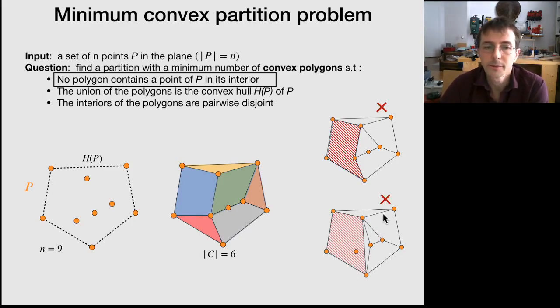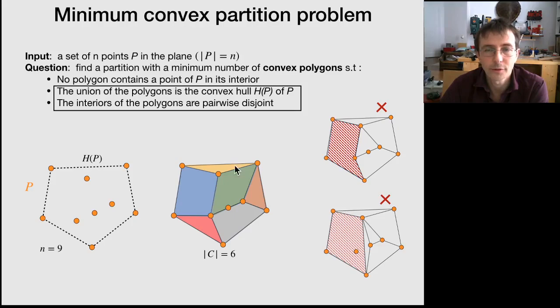And finally the polygons must define the partition of the convex hull. So the union of the polygons must be the convex hull. And the polygons must be pairwise disjoint basically. So that's basically the definition of a partition.